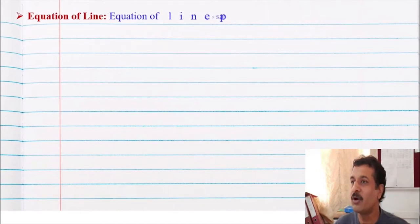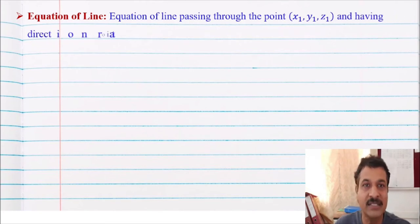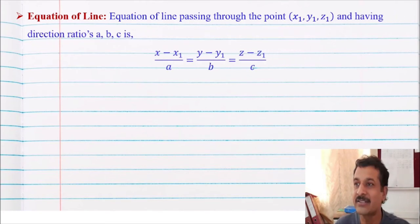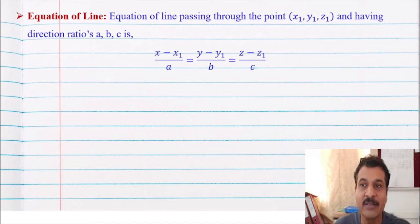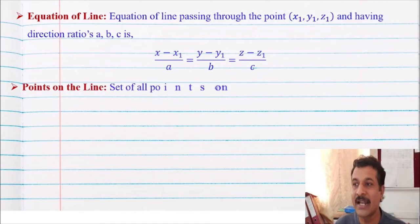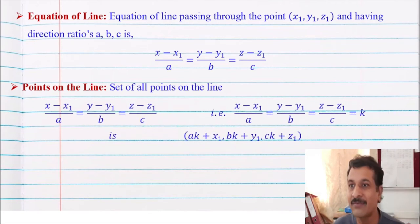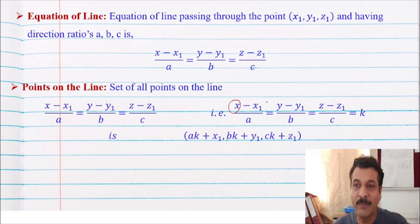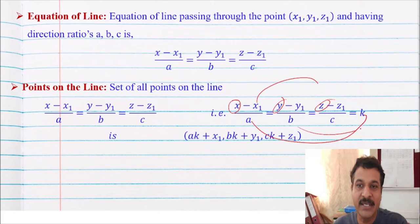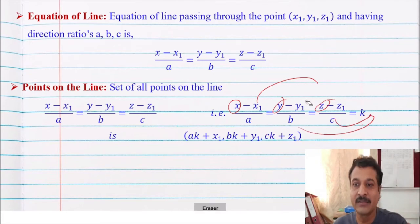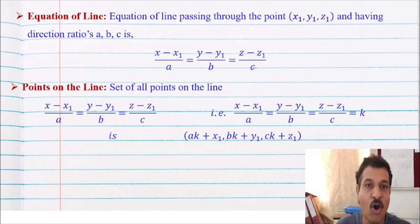Also very important: the equation of a line passing through the point (x1, y1, z1) and having direction ratios A, B, C is (x minus x1)/A equal to (y minus y1)/B equal to (z minus z1)/C. If we want to find a point on that particular line, we equate to k and find the values of x, y, z, giving the point (Ak plus x1, Bk plus y1, Ck plus z1) — this is the set of points on that line.